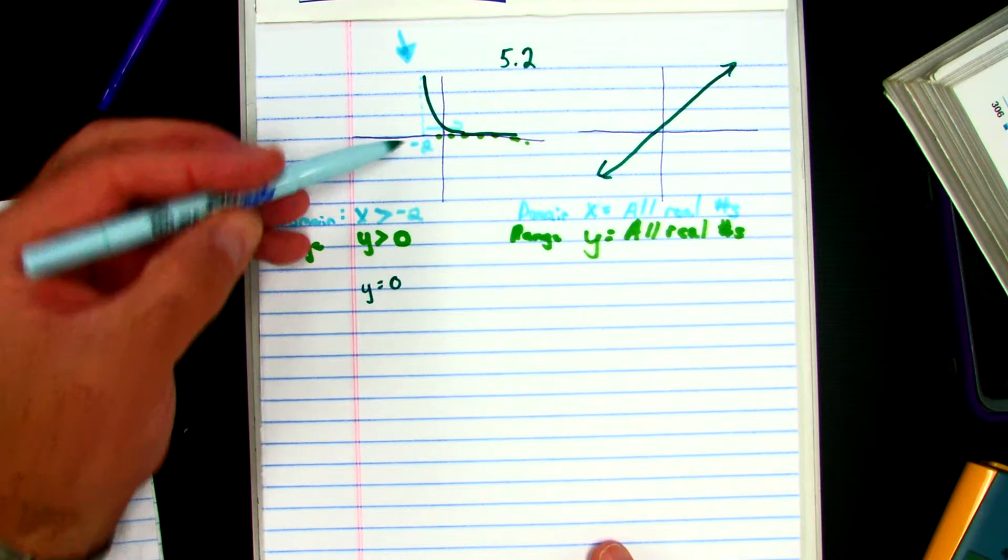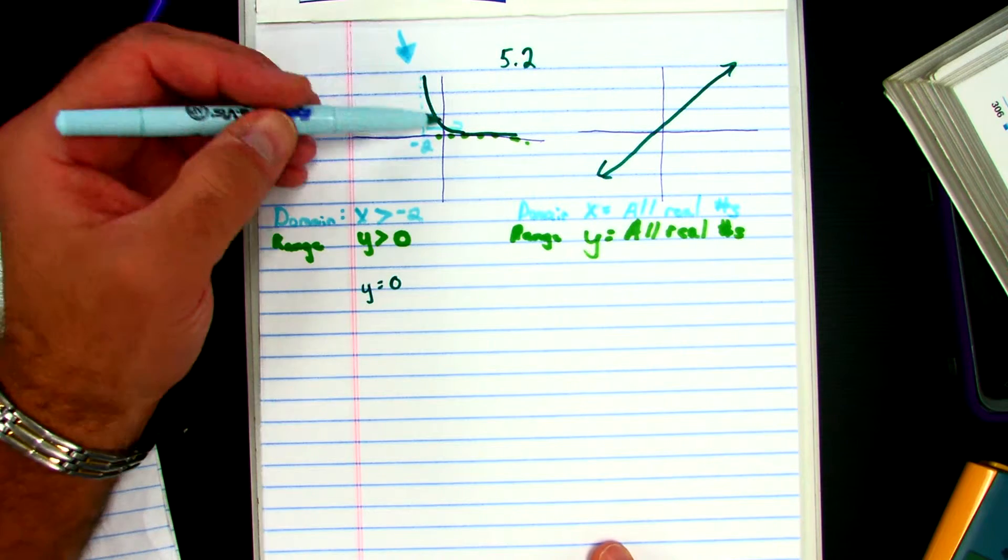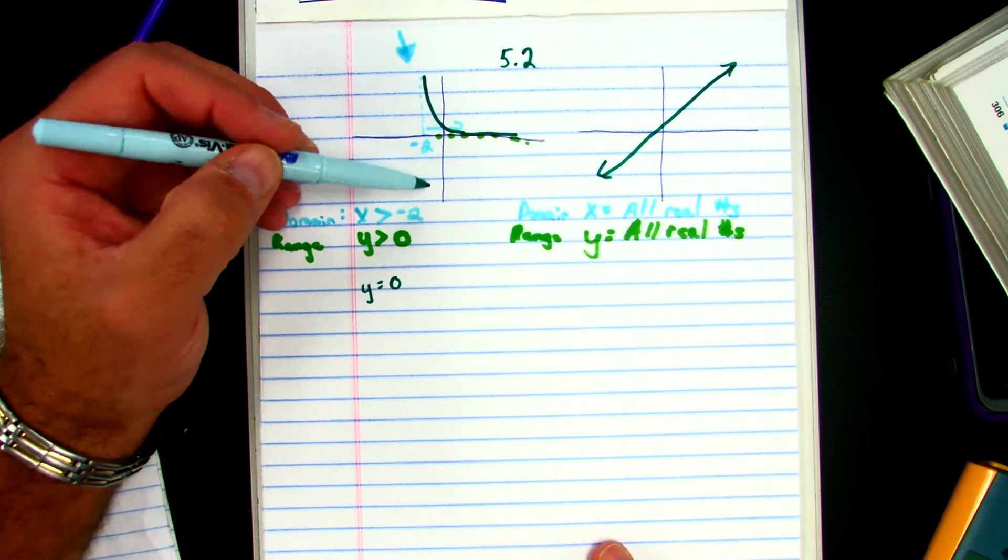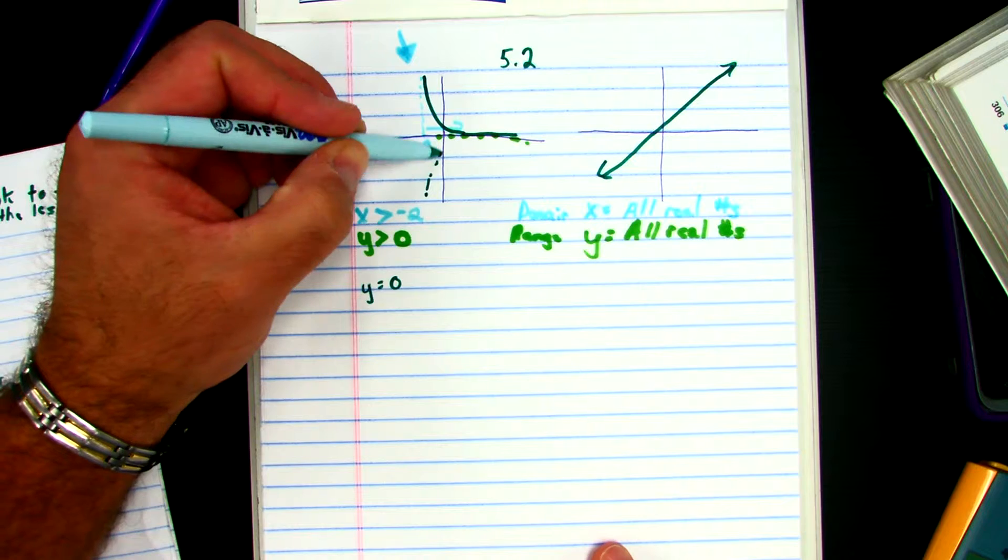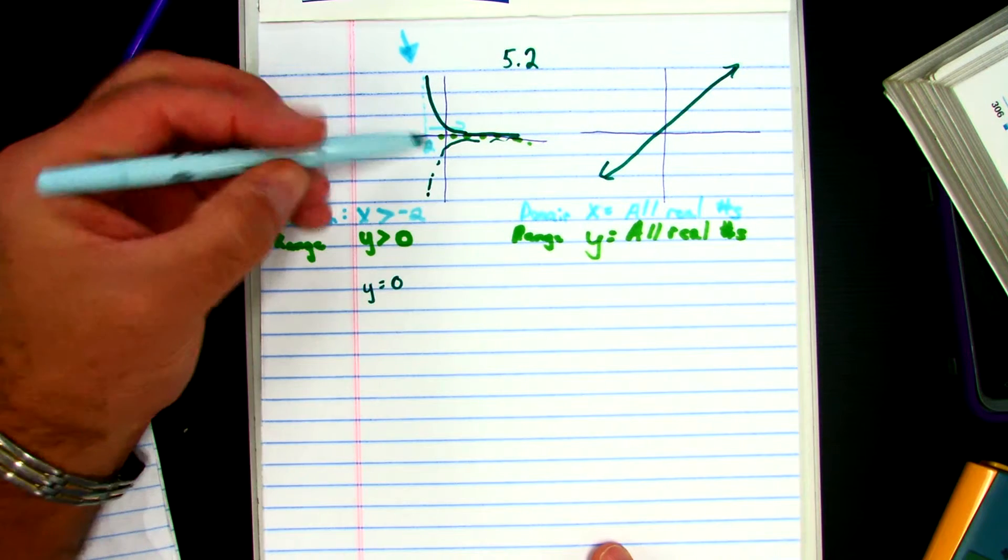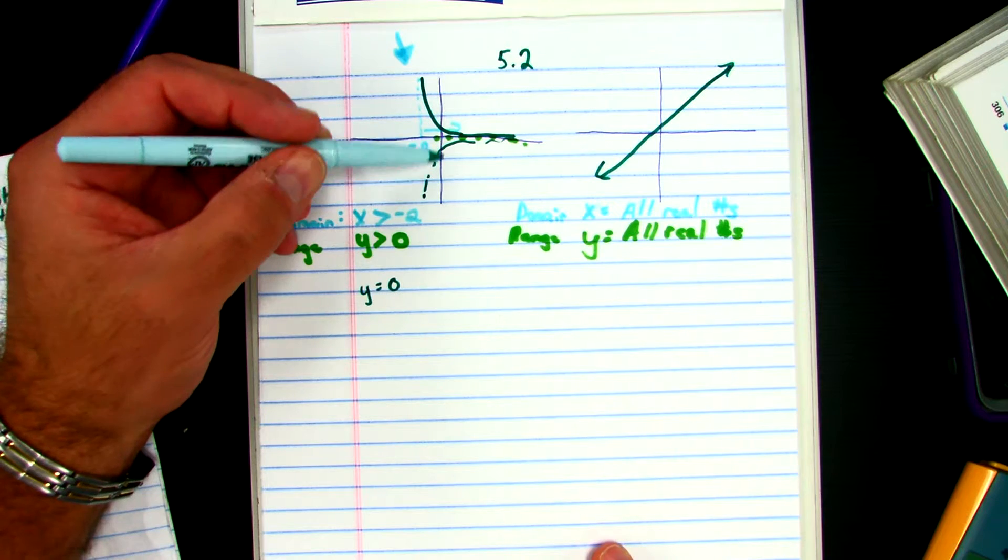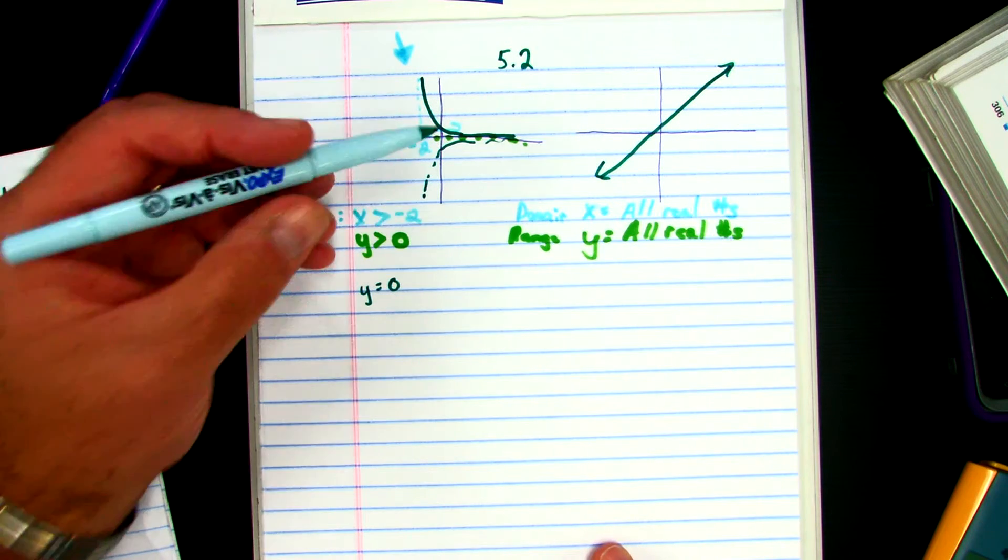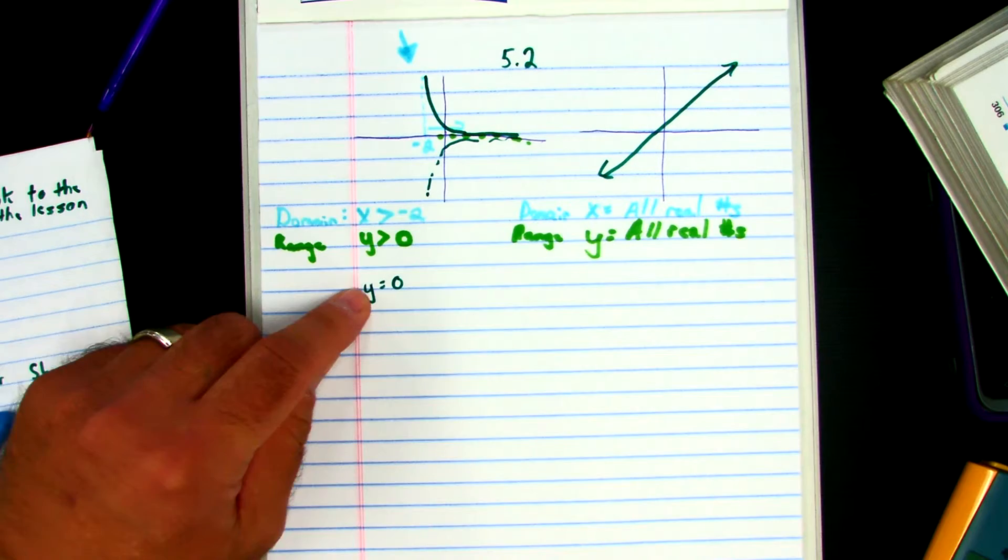Thus our range has to be greater than 0 because it never goes below 0. It's got to go above. Now if it was drawn upside down, like you've seen in some of your Carnegie work, then it would be all the Y's less than 0, obviously because the line is lower than, or the curve is below the 0. But my asymptote is still Y equals 0.